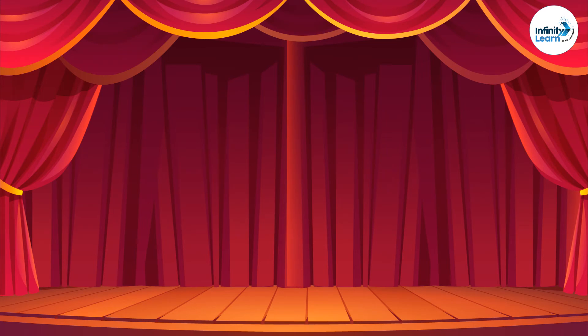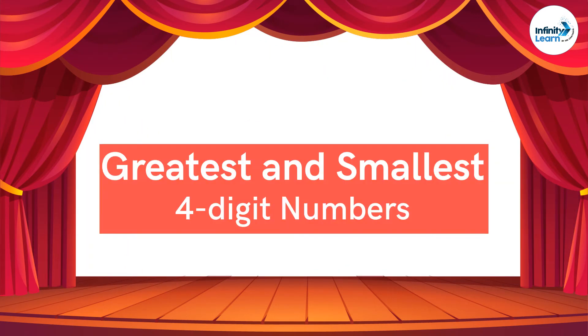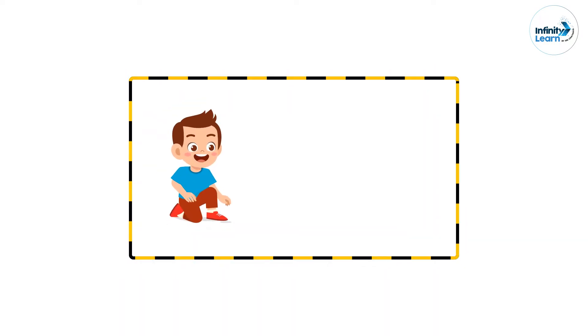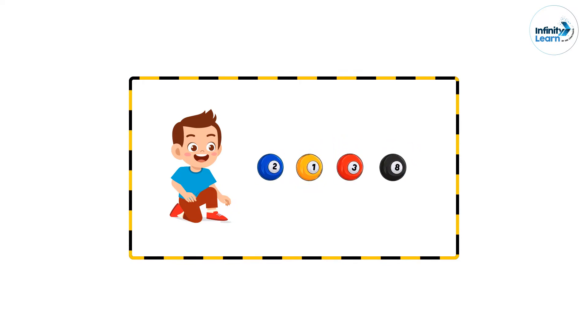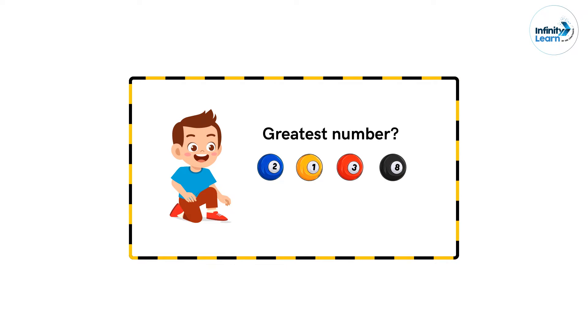Hello students, welcome back! In today's session, let us learn about the greatest and smallest four-digit numbers. Sammy was playing with pool table balls. He picked four balls numbered 2, 1, 3, and 8. What is the greatest number Sammy can make with the pool table balls? We have four digits: 2, 1, 3, and 8.